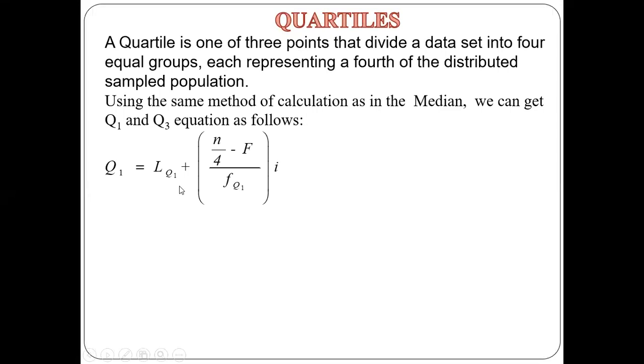Where L_Q1 is the lower class boundary of the lower quartile, N is the total frequency, F is the cumulative frequency before the lower quartile class, and F_Q1 is the frequency of the lower quartile class.